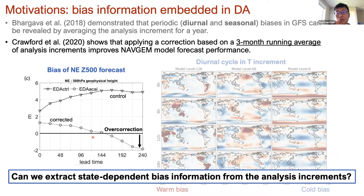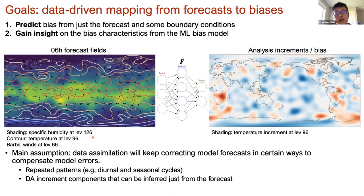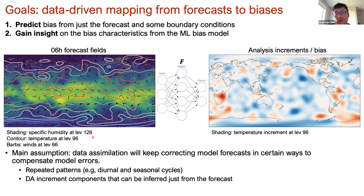The question we're trying to answer is: can we extract state-dependent bias information from the analysis increment and apply it for different forecast conditions? There are two goals. First, the mapping between the six-hour forecast field and the corresponding bias — approximated using analysis increments. Second, gaining insight about the bias characteristics of the model. The bias information is embedded inside the noisy analysis increment, and we use machine learning to distill this information. The main assumption is that if there is a model error, data assimilation would keep correcting the forecast in certain ways.